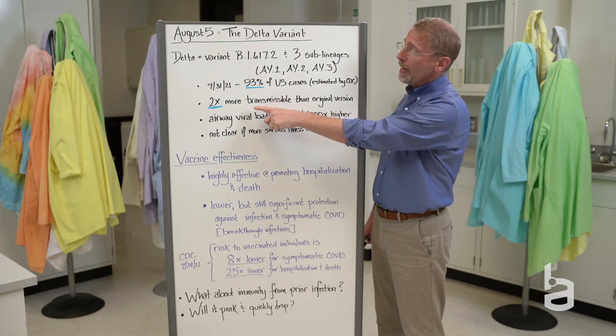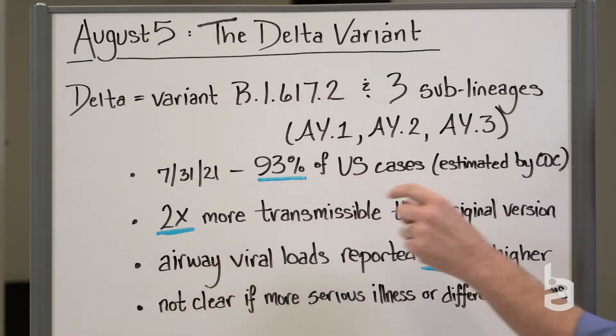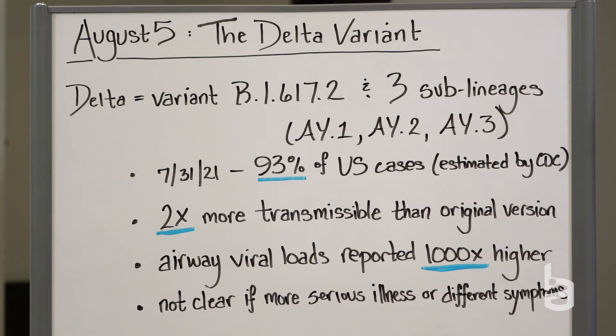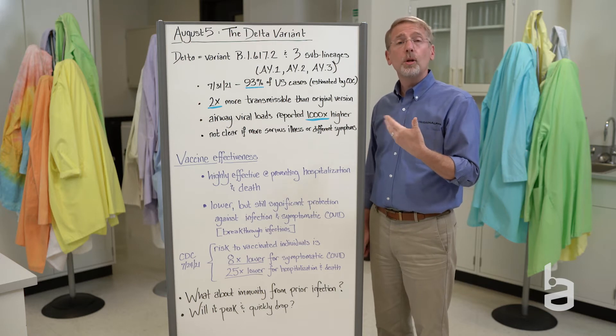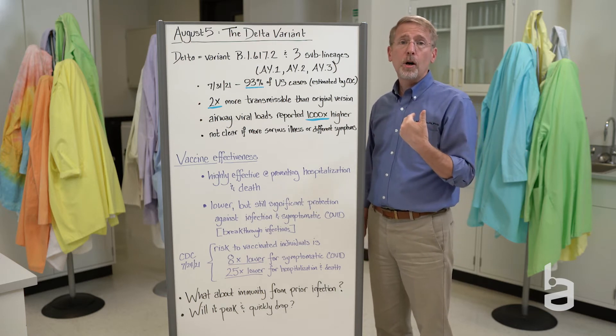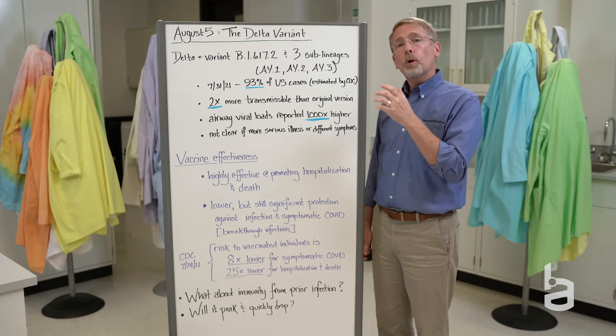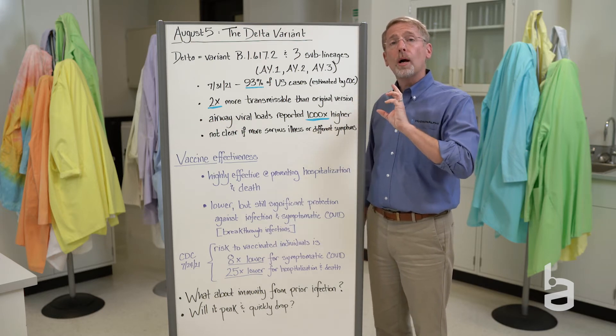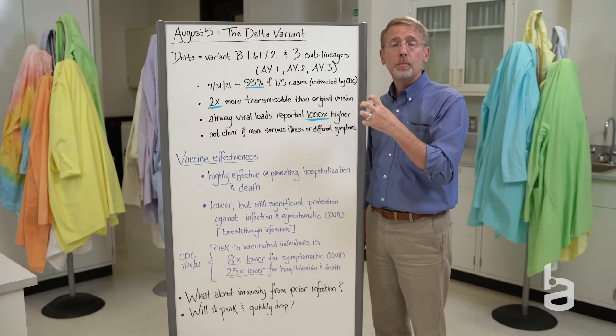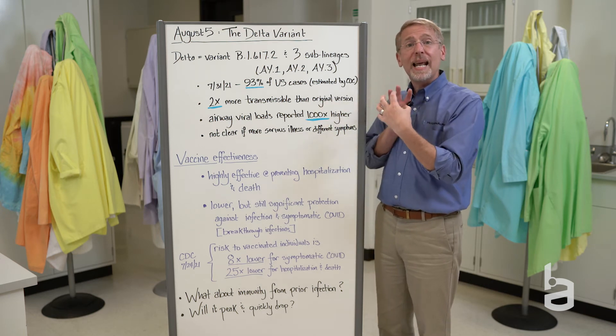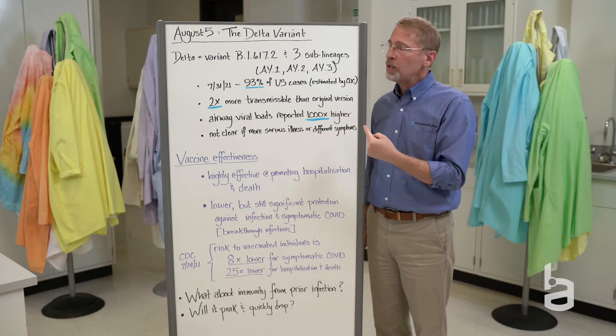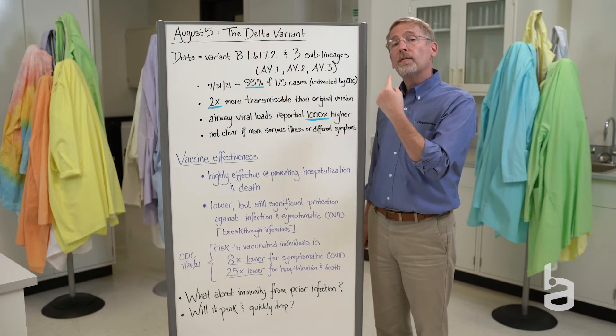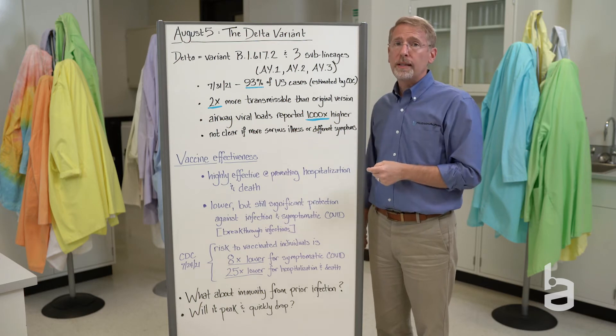We know that this version, Delta, is twice as transmissible, it spreads twice as easily as the original version of the SARS-CoV-2 virus. And it's about 50% more transmissible than the Alpha variant that we talked about earlier this year. We're not 100% certain about why. We know that some mutations make it more able to latch tightly onto human cells to make that connection to infect those cells. We also know that there are some mutations that allow the virus to replicate itself more quickly.